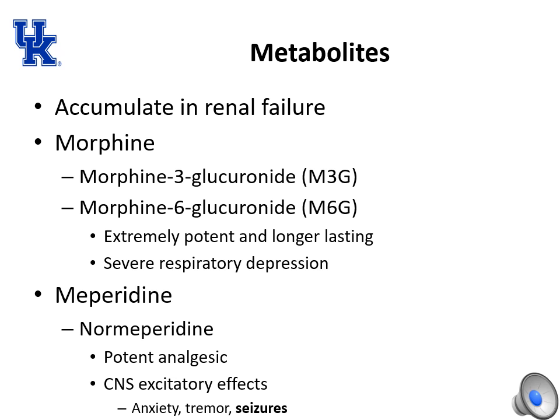A few opioids have metabolites we need to be cautious about, particularly in patients with renal failure or renal insufficiency. Morphine is converted to morphine 3-glucuronide and morphine 6-glucuronide (M6G). M6G is an extremely potent, longer-lasting opioid derivative that can cause severe respiratory depression if it accumulates. Mepiridine's metabolite normepiridine is a potent analgesic but has CNS excitatory effects; if it accumulates, it can cause anxiety, tremor, and — most worrisomely — seizures.